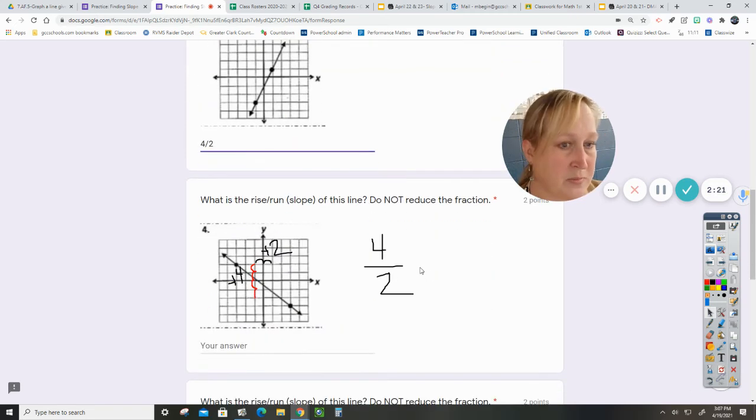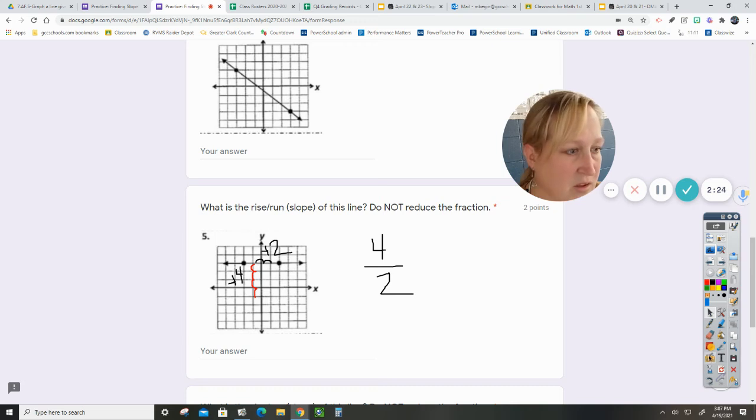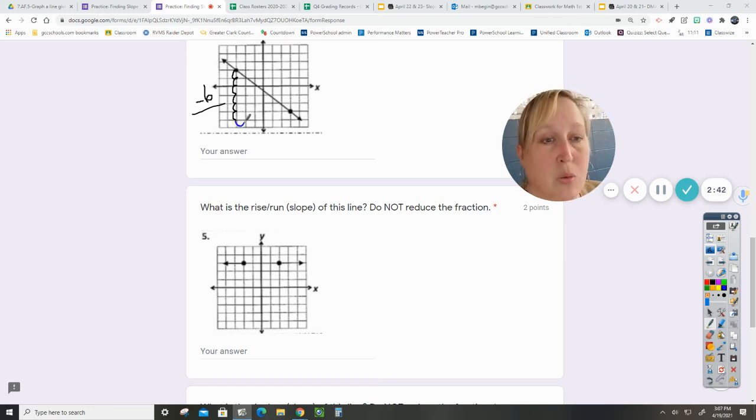For the next one, let's see if I can get two to fit in one page. It does not look like I can, but we'll try. All right, this one is downhill. So negative one, two, three, four, five, six. So negative six over, we're going to do the run, which is one, two, three, four, five, six, seven. So negative six over seven.